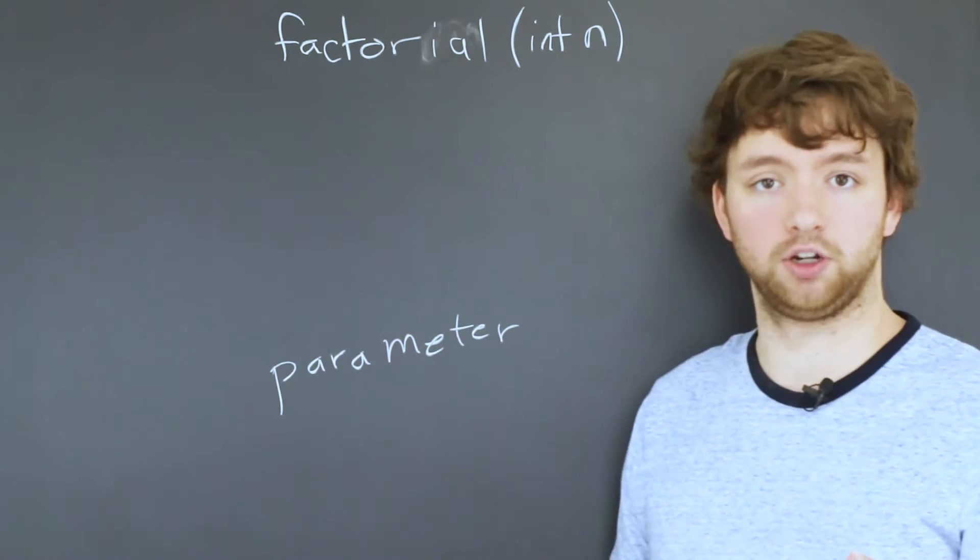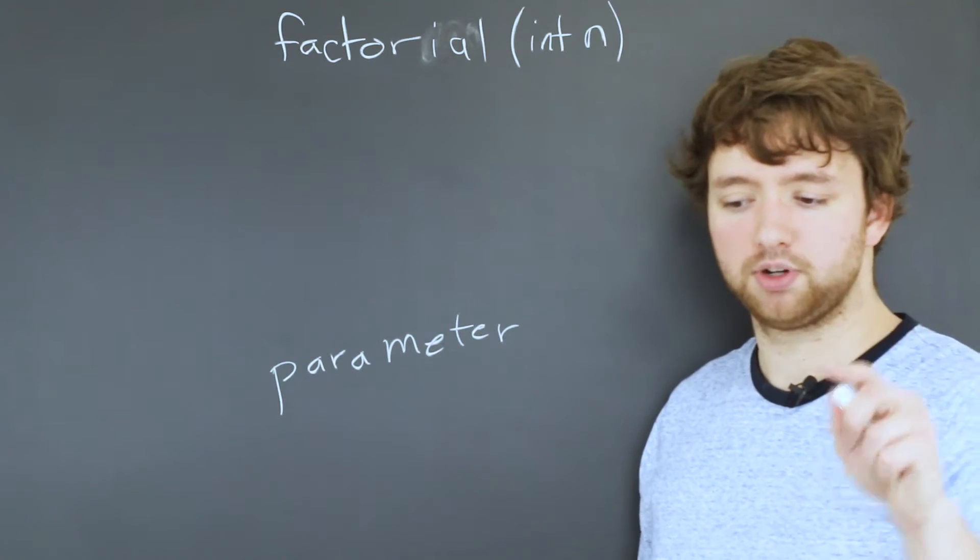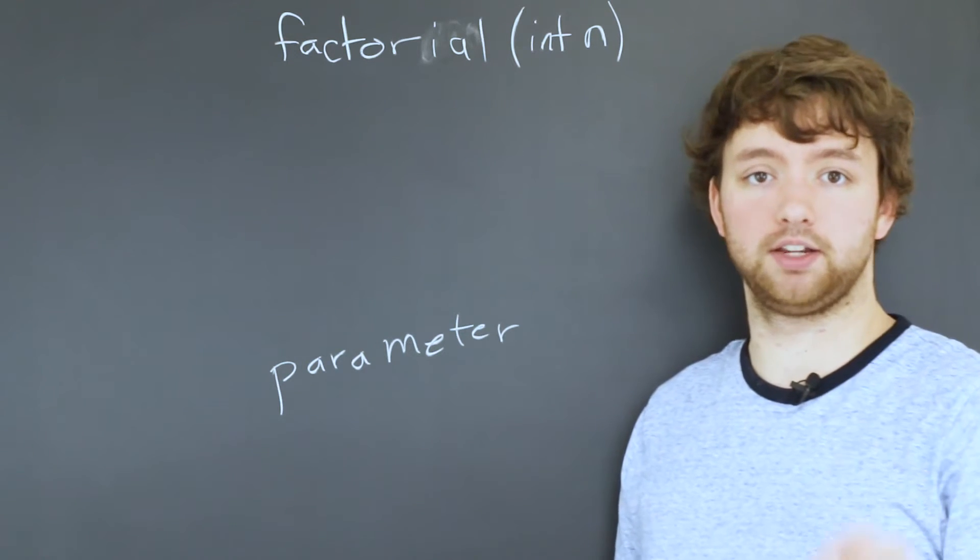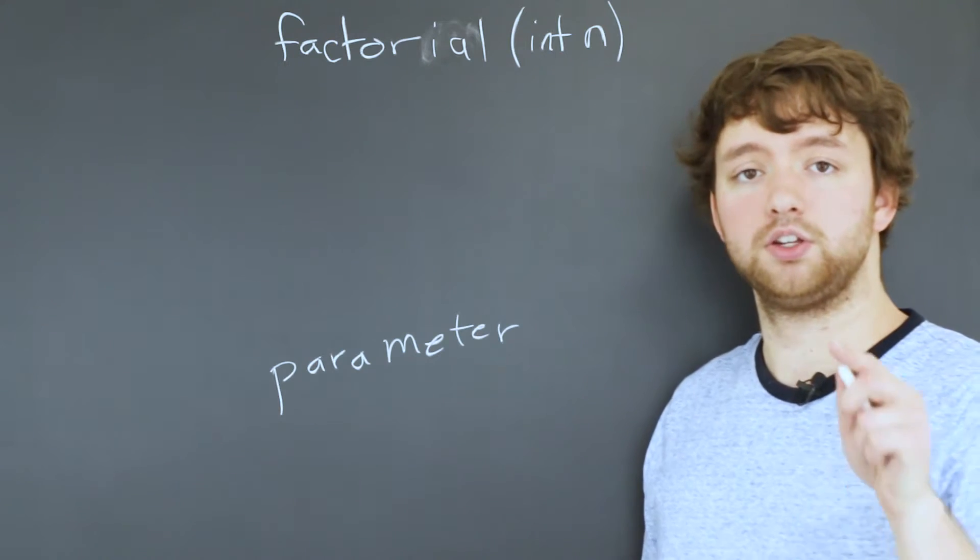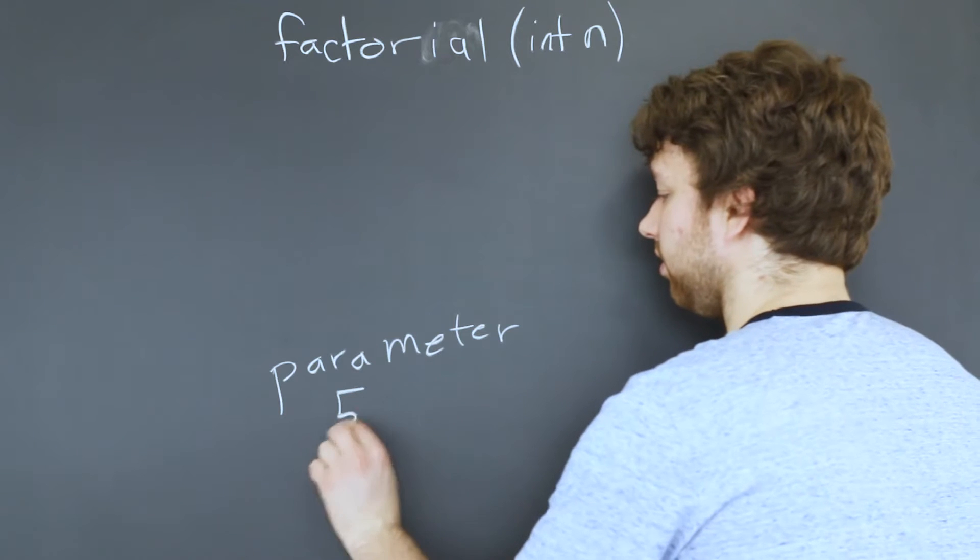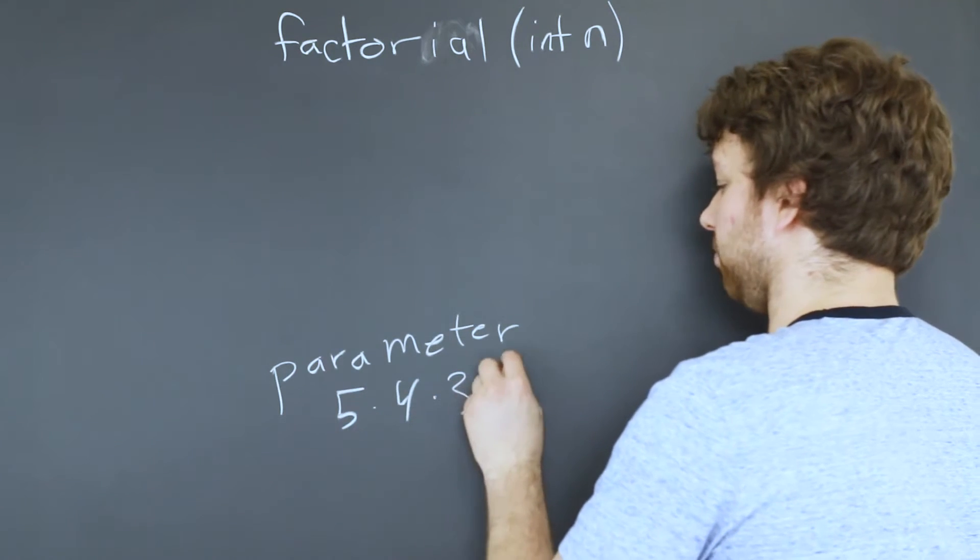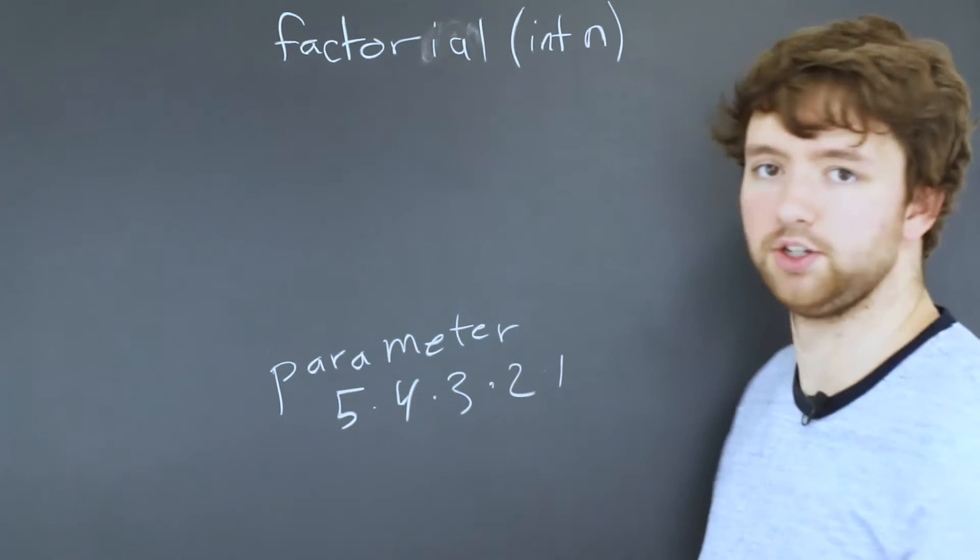Parameter. Next thing is the return. So that is defining the type of output we're expecting from this function. So what does a factorial do? If we passed in the value 5 it's going to multiply from 5 down to 1 and give us a new value.